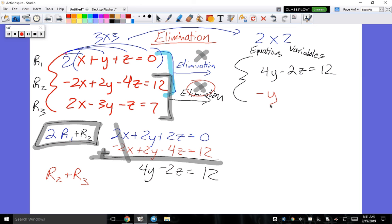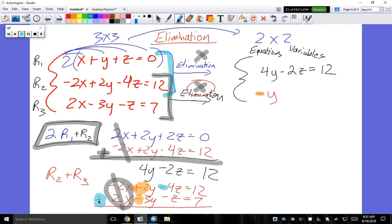And guys, if you need to show this work, just do it off to the side. Negative 2x plus 2y minus 4z is equal to 12. 2x, this is row 3, is equal to 7. And remember, you're adding these. And you see, those cancel to zero. You have to be good at adding and subtracting negatives. So positive 2 minus 3 is negative 1. And then you have over here a negative plus another negative. You get negative 5y. And anyone, what do I get on the other side? 19.